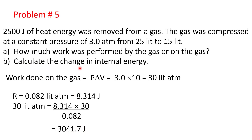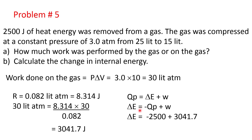Now for the change in internal energy using the first law: heat is removed from the system so Q is negative (−2500 J); work is done on the system so W is positive (+3041.7 J). Therefore ΔE = −2500 + 3041.7 = 541.7 joules.